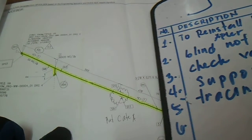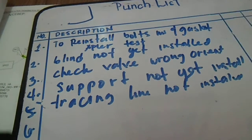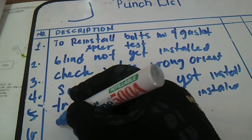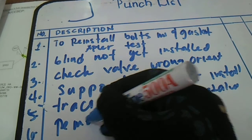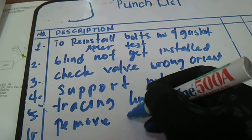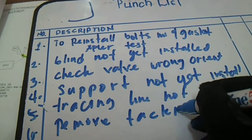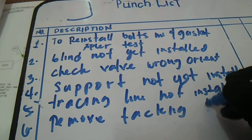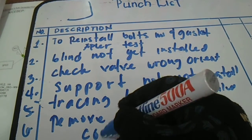Number six: let's say we have damage from the pipe, or we have tucking from the pipe. The comment is to remove tucking and conduct flush/empty.